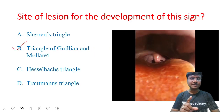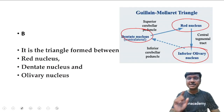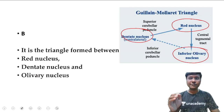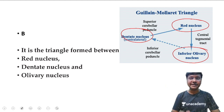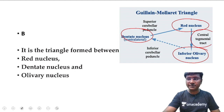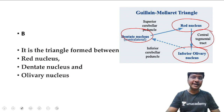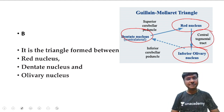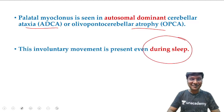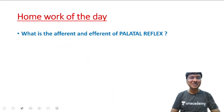The Triangle of Guillain and Mollaret is formed between the red nucleus, inferior olivary nucleus, and dentate nucleus. The lesion can also be within the central tegmental tract for the development of palatal myoclonus.